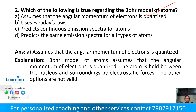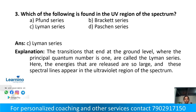Which of the following is found in the UV region of spectra? Option A: Pfund series. Option B: Brackett series. Option C: Lyman series. Option D: Paschen series. The transition to principal quantum number n=1 is called the Lyman series, which lies in the UV region. The answer is Option C: Lyman series.